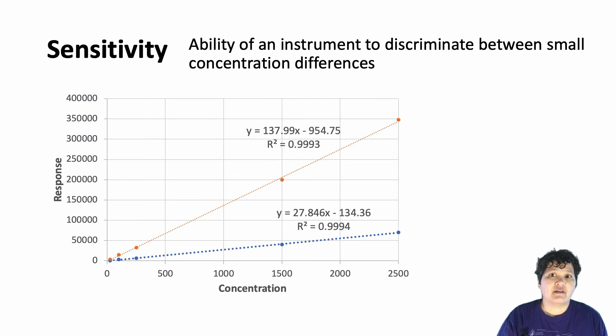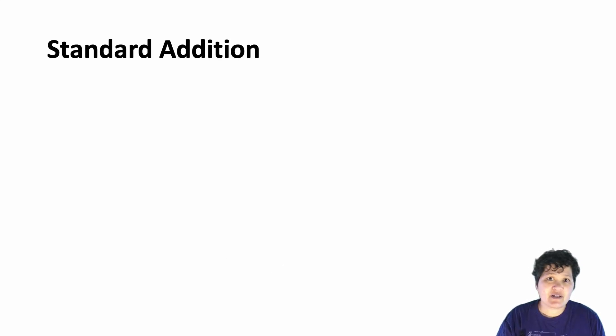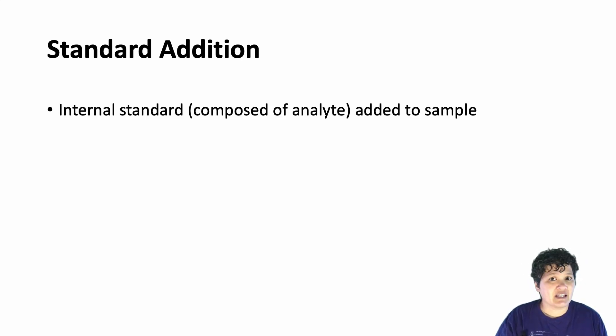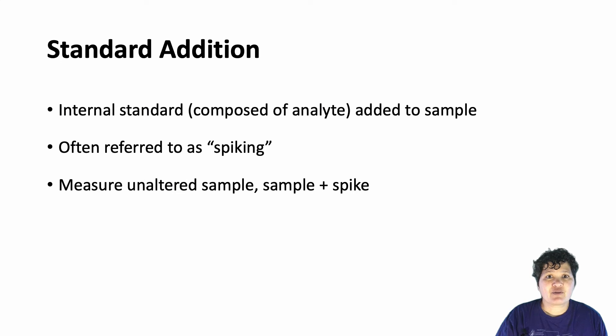All right, now we're going to talk about how to use internal standards to quantify an analyte. We do this using a process called standard addition. Basically, before you analyze your sample, you add a known amount of analyte to the sample. We often call this process spiking. We then measure both an unaltered aliquot of sample and an aliquot of sample that has been spiked with analyte.